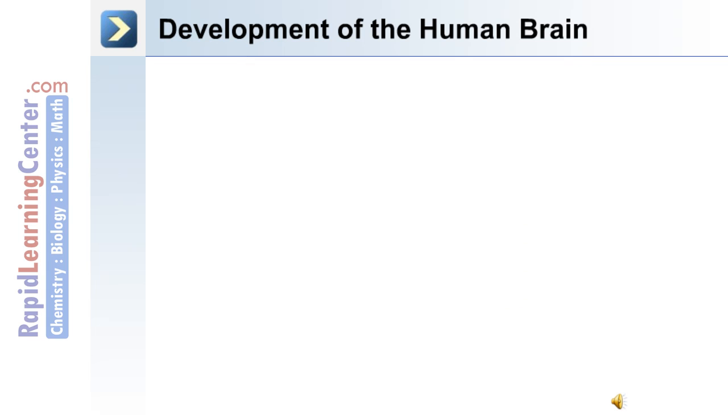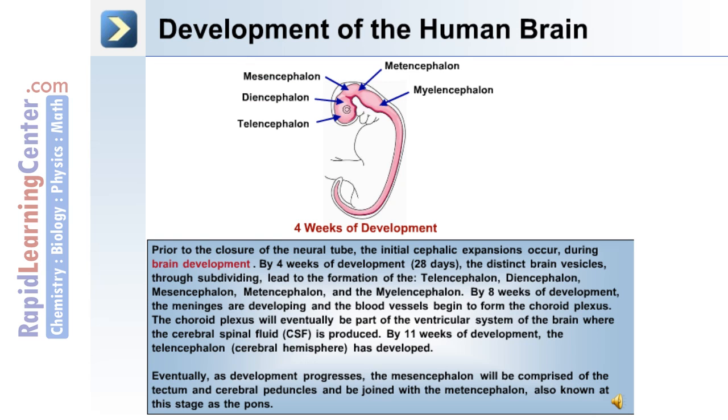The development of the human brain. Prior to the closure of the neural tube the initial cephalic expansions occur. By four weeks of development, the distinct brain vesicles, through subdividing, lead to the formation of the telencephalon,